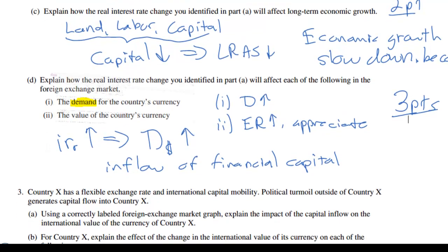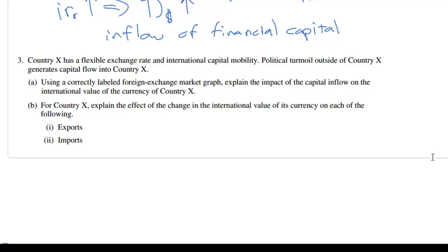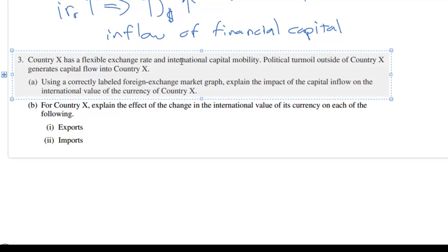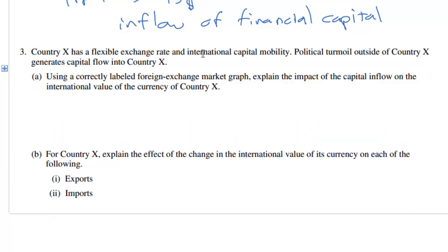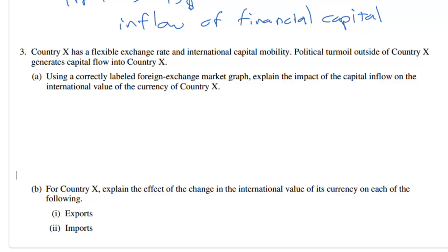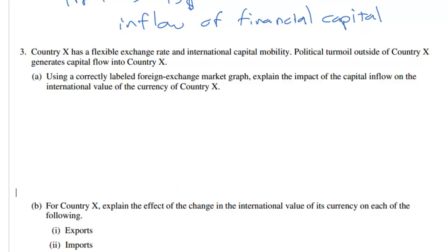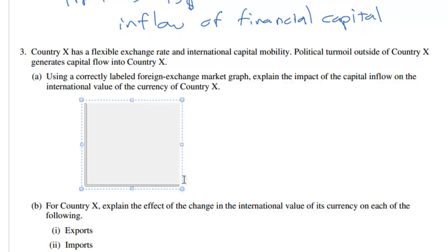Now let's do one more short free response question. Question 3 states: Country X has a flexible exchange rate and international capital mobility. Capital mobility means that foreign exchange is allowed to be exchanged and that foreign investors are allowed to buy assets in this country, including government bonds, the country's currency, and stocks in corporations. It means there is a free flow of financial investment in and out of the country. Political turmoil outside of country X generates a capital flow into country X, and we need to draw the foreign exchange market graph.